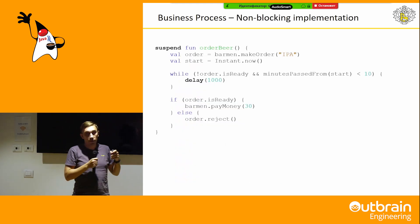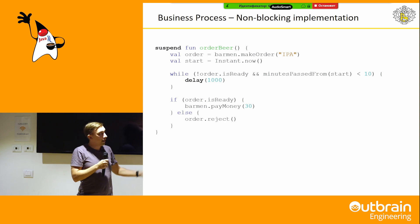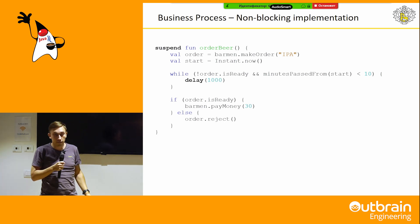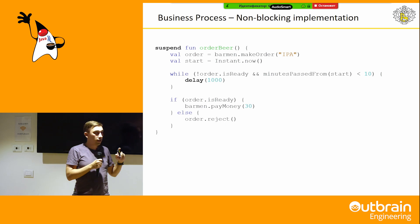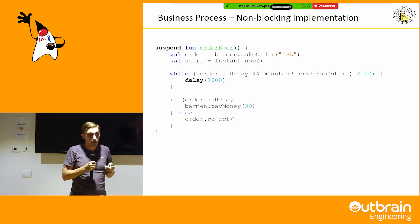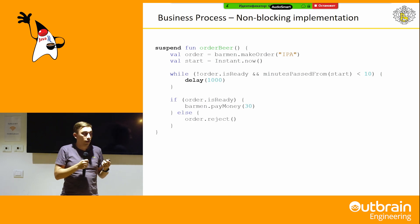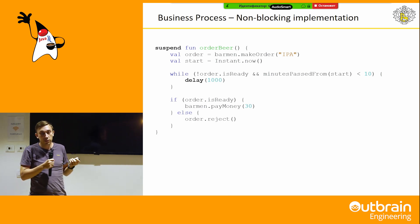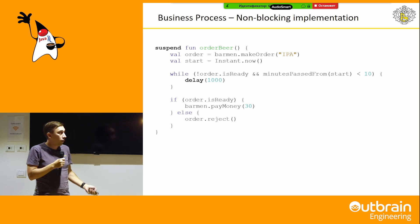We can provide some non-blocking API, for example Kotlin coroutines, and it solves that problem — but we still have another problem. For example, we order the beer and then our application restarts. After that we will lose our order because nobody will pay for it and nobody will reject it.